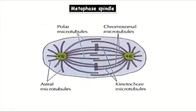Some proteins also assemble at the kinetochore — specifically microtubule motor proteins. There are two types of motor protein: plus-end and minus-end. The minus-end motor protein draws the chromosome towards the pole — it directs the movement of the chromosome towards the centrosome.